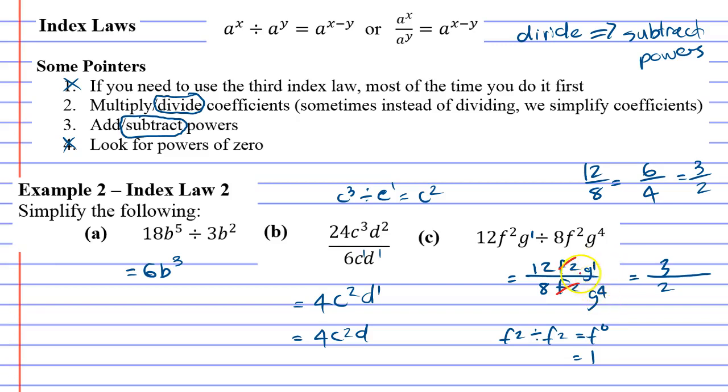We'll just focus on the g. g to the power of 1 and g to the power of 4. Some of you might notice that if I do 4 minus 1, I'll get 3. The problem being that the one with the greater power is at the bottom or in the denominator.